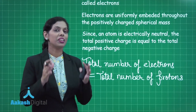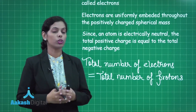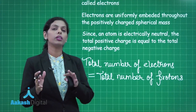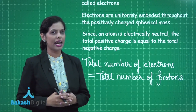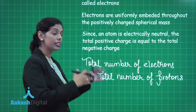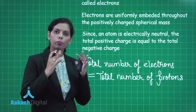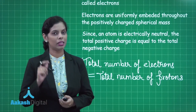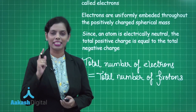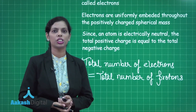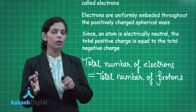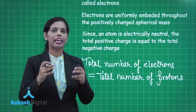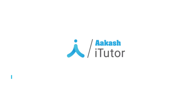That model was proposed by Thomson, and yes, it was the first atomic model, so it was quite important. Before him, there was nobody who had described the atom in this manner. Basically, Thomson's atomic model is quite important. But still, it has certain limitations, which is why a number of atomic models came further.